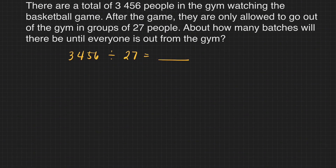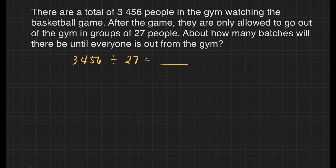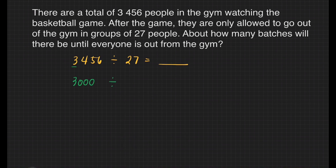The next step is to round off the dividend and the divisor to their highest place value. For 3,456, we'll round it off to the nearest thousands — that will give us 3,000. Copy the division sign. Next, let's round off 27 to the highest place value, which is the tens place. This will give us 30.